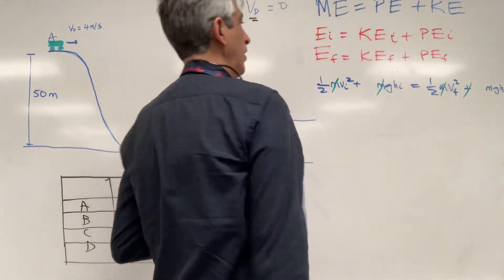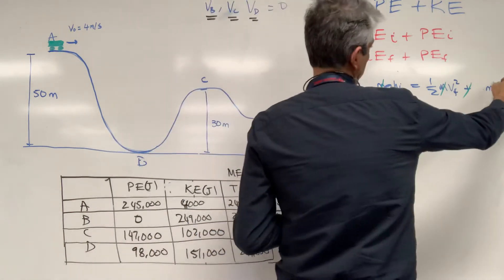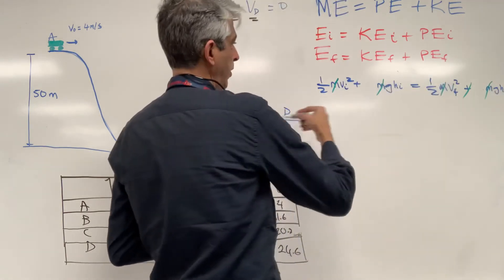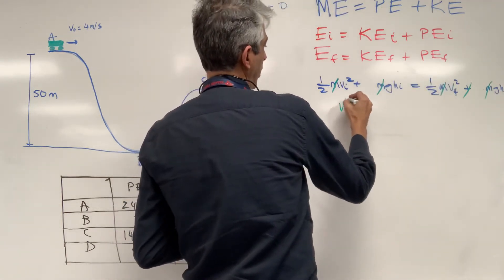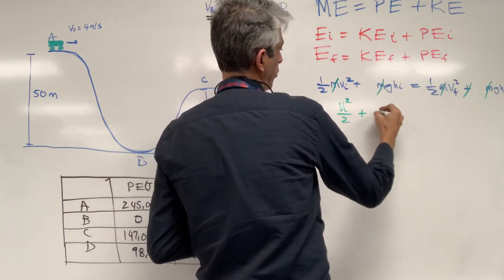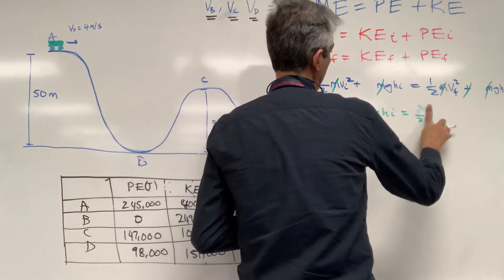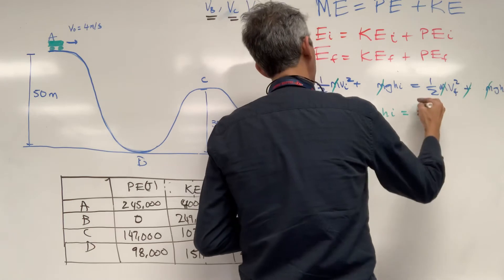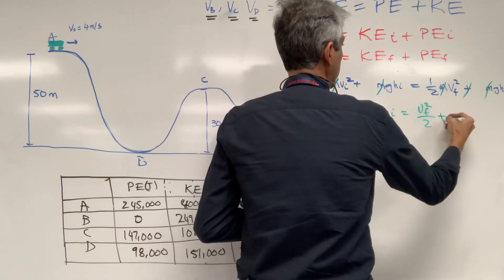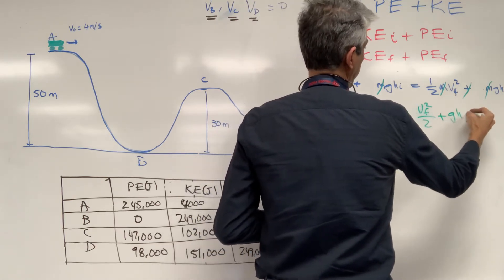And you're actually left with vi squared over 2 plus gh i is equal to vf squared over 2, just like that way, just like you wrote this one, plus gh final.